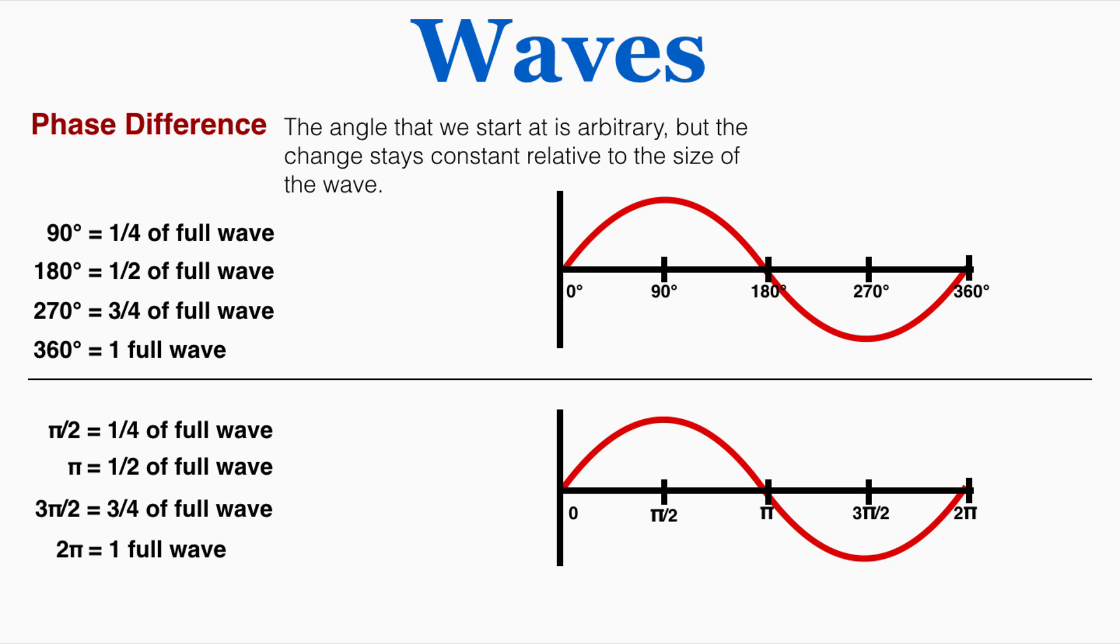So the thing that's not arbitrary about the relationship between the angle and the wave is what fraction of the wave a change in angle produces. For example, if we graph the full wave using that circle, no matter which part of the wave we're looking at, a 90 degree or pi over 2 radian change in the circle results in a change of one quarter of the wave.